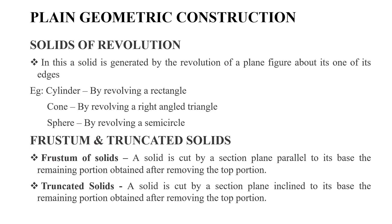The next category is solids of revolution, where a solid is generated by the revolution of a plane figure about its own axis or edge. A cylinder is generated by revolving a rectangle. A cone is generated by revolving a triangle. A sphere is generated by revolving a semicircle.